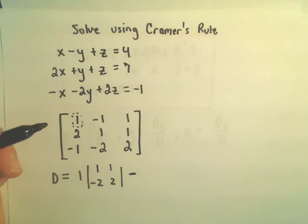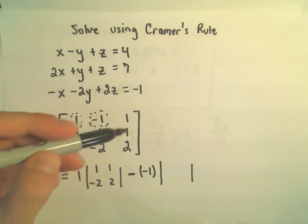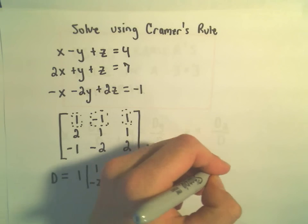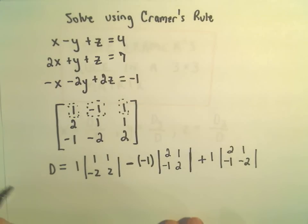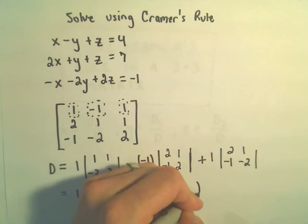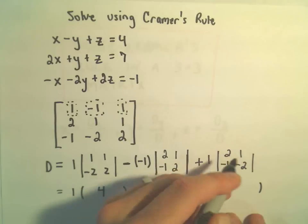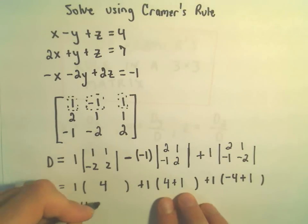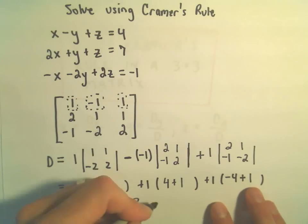We put a negative for our middle term and use negative 1. If I cover up that row and that column, we'll have 2, 1, and negative 1, 2 left over. Then we use a plus sign for the last entry — we've got 1 there — and we'll have 2 and 1, and negative 1 and negative 2. Computing these: 1 times 2 plus 2 gives 4; then negative 1 times 2 times 2 minus negative 1 gives plus 1; and 1 times negative 4 minus negative 1 gives plus 1. So 1 times 4 is 4, plus 5 minus 3 equals 6.